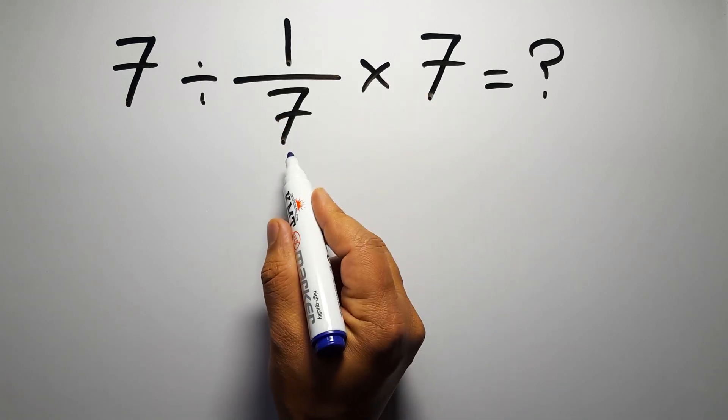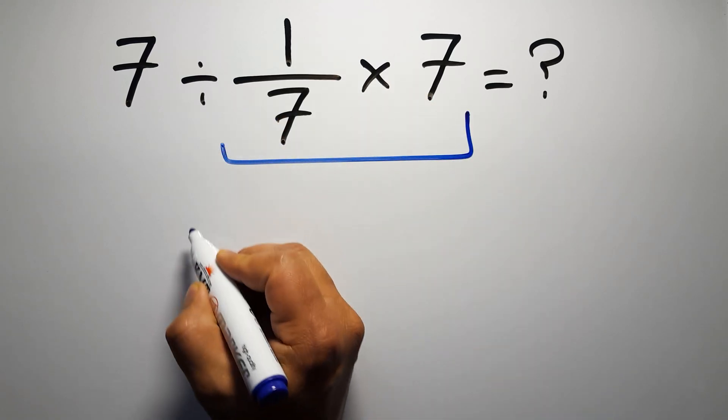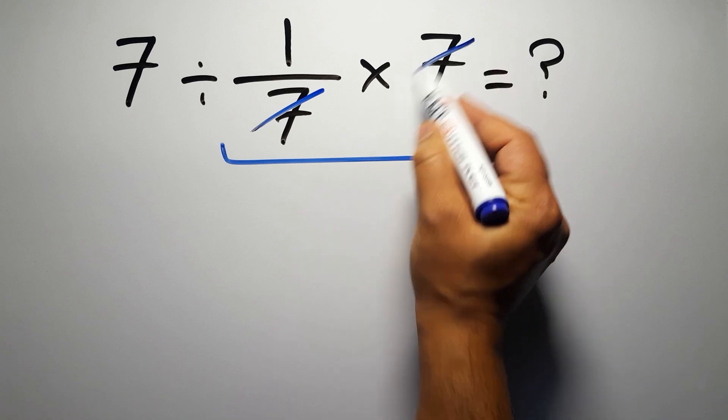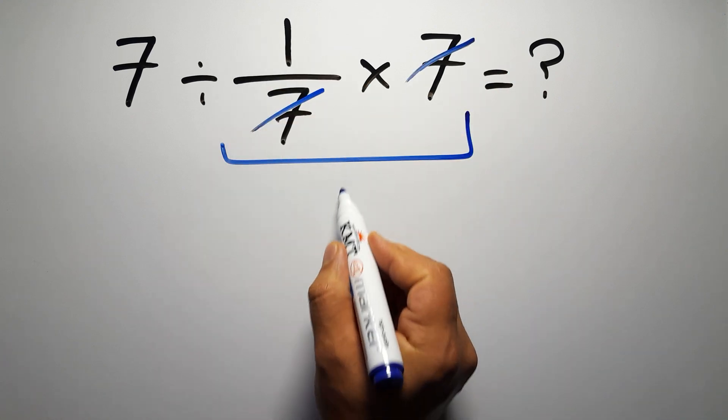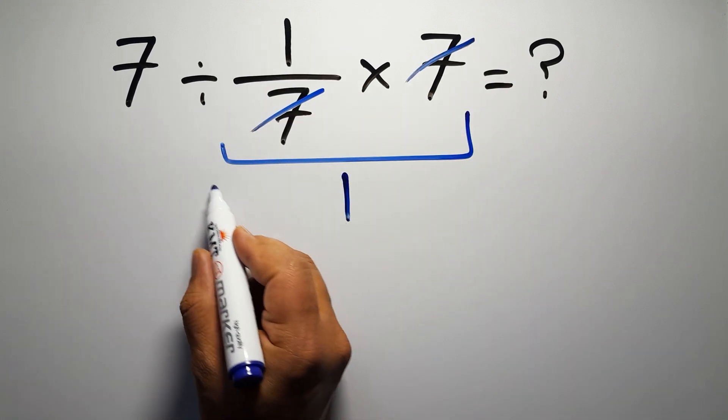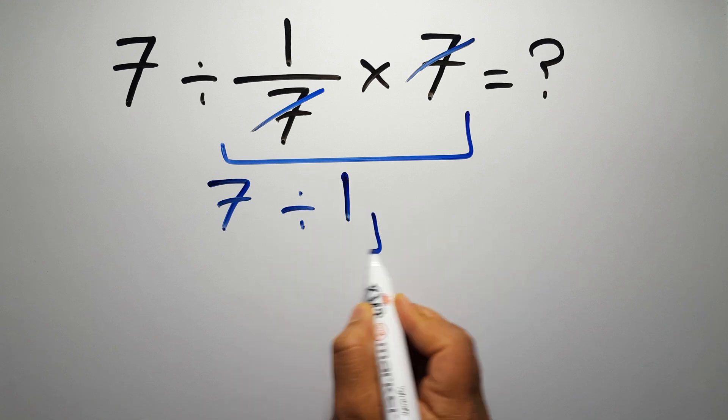First we do this multiplication, 1 over 7 times 7. We can easily cancel this 7 and this 7, so here we have just 1. And 7 divided by 1 gives us 7.